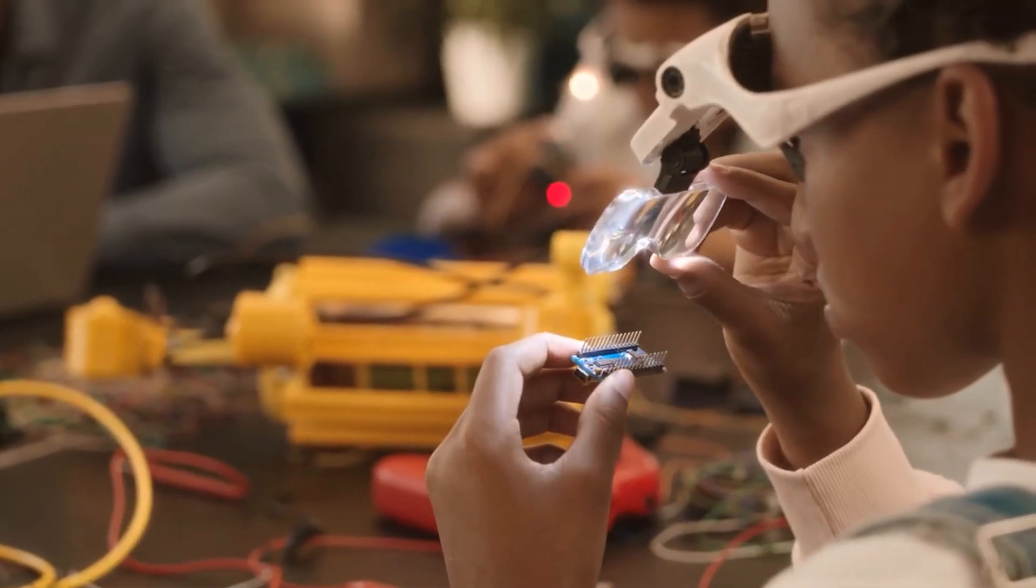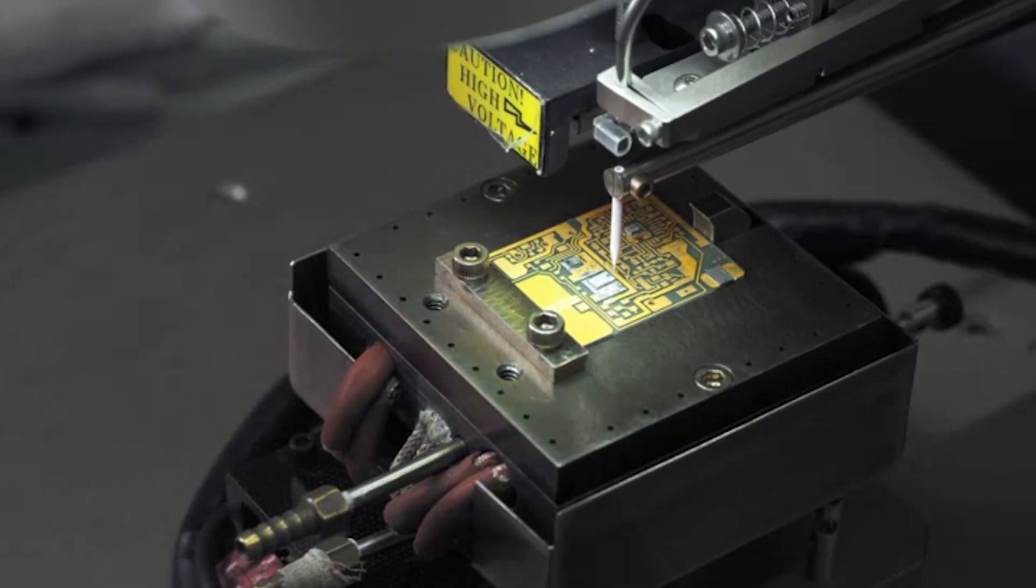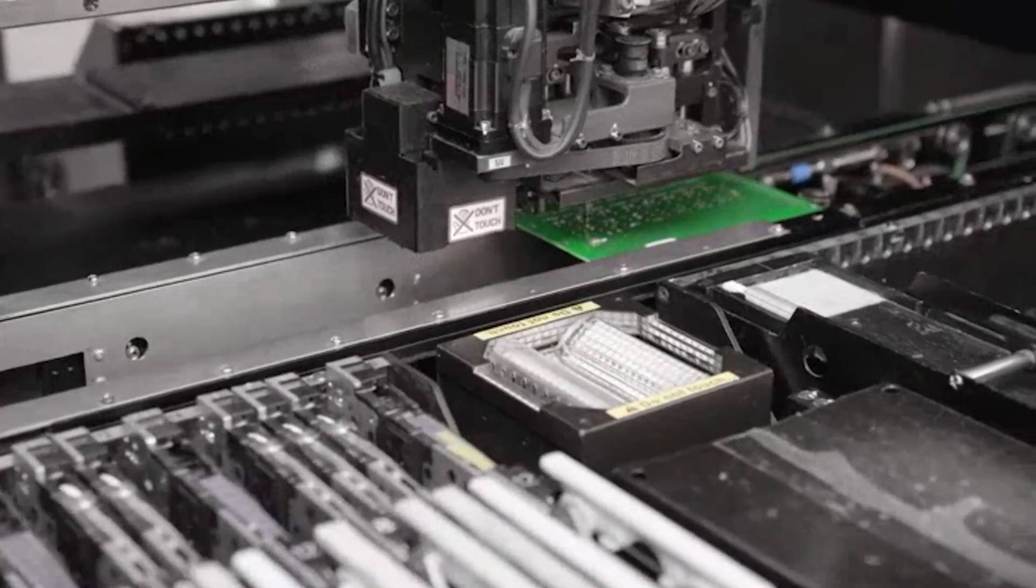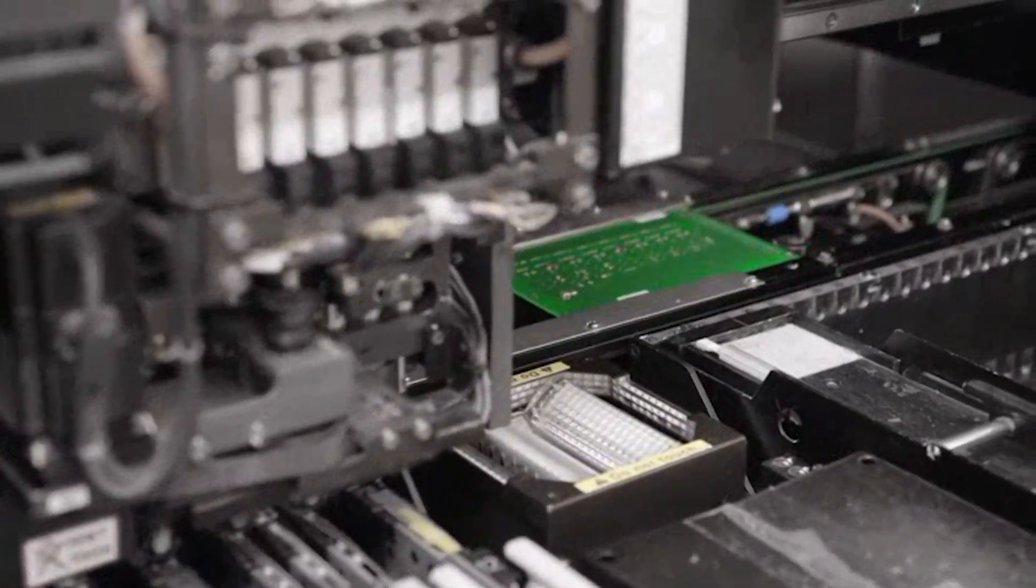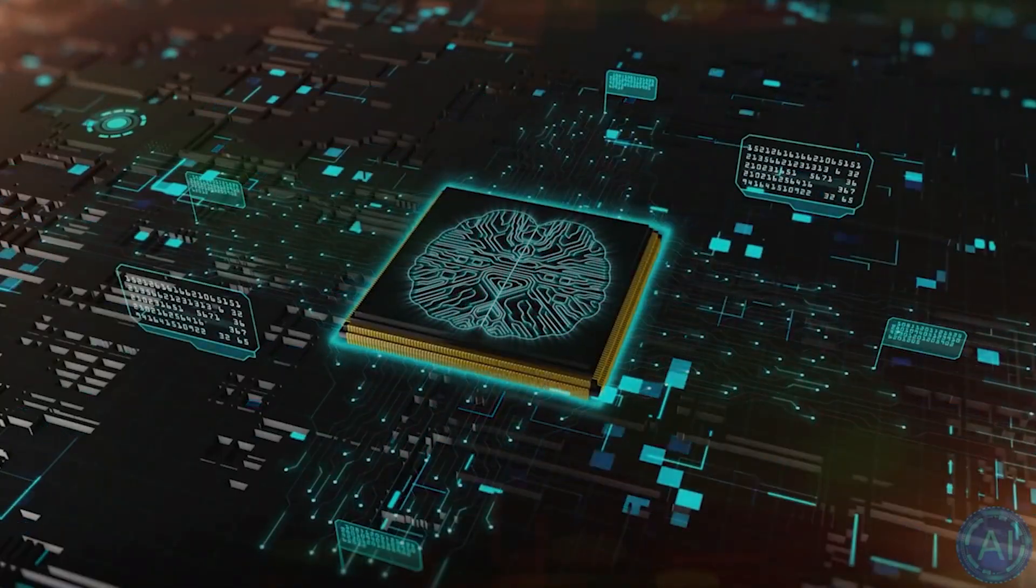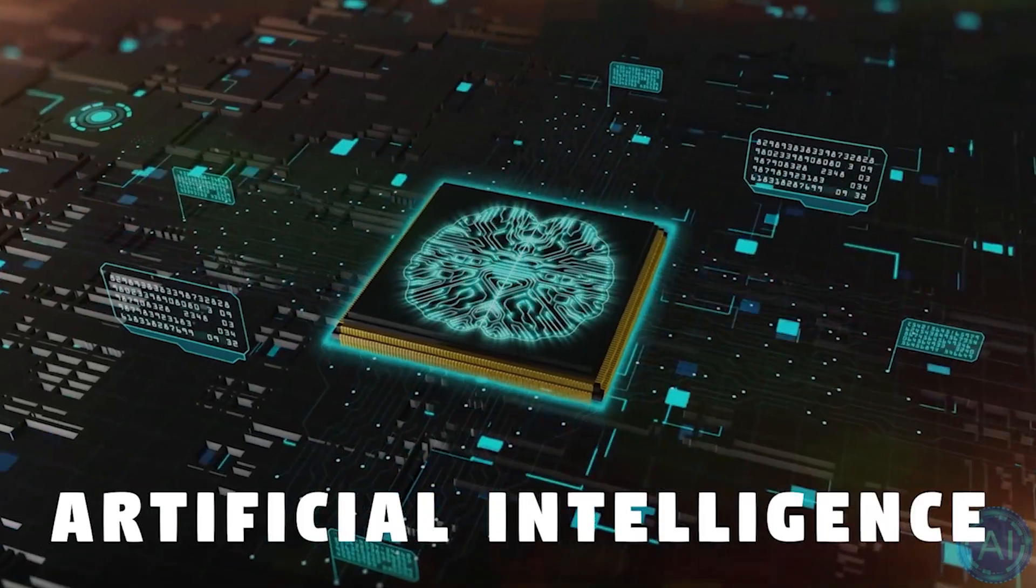This may be achieved using optical chips made with silicon technology, for example. It is challenging to predict how this type of computing will be integrated into the first consumer hardware. But it is undoubtedly one of the more likely paths that artificial intelligence will take in the future.